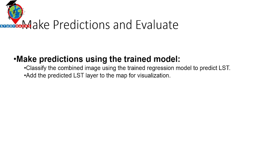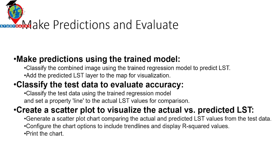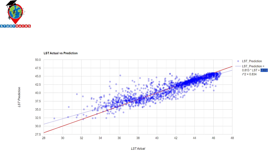Finally, prediction and evaluation using this model. We make the prediction using the trained model — our 80% training data classifies the combined image using the trained regression model to predict LST. We add the predicted LST as a layer for map visualization. Then we classify the test data to evaluate the accuracy using the trained regression model, and set priorities aligned to compare actual LST values. We create a scatter plot to visualize actual versus predicted LST, and generate a chart comparing actual and predicted LST, displaying the R-squared value.